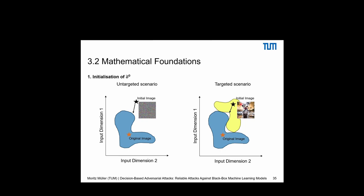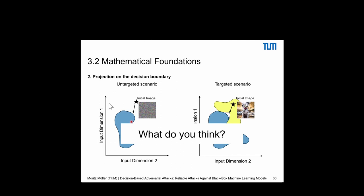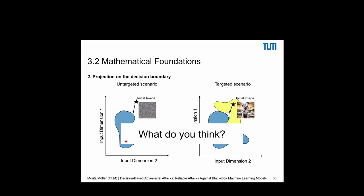The next step is projecting the initial image onto the decision boundary. The paper does not define exactly how this works. One suggested approach is binary search: draw a line between the original image and the initial image, perform binary search along that line, and blend the original image into the random noise image until it is misclassified as no longer being a lady beetle.